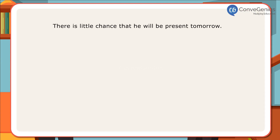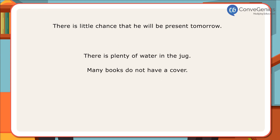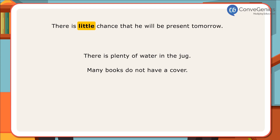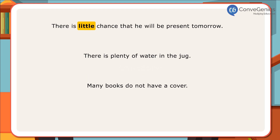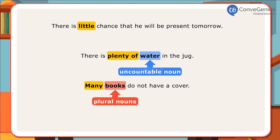Let us look at a few sentences. There is little chance that he will be present tomorrow. There is plenty of water in the jug. Many books do not have a cover. In the first sentence, little has been used and it conveys a negative idea, since little without 'a' has a negative sense. In the second sentence, plenty of has been used since water is an uncountable noun, and we use plenty of with uncountable nouns. In the third sentence, many has been used since we use many with plural nouns.